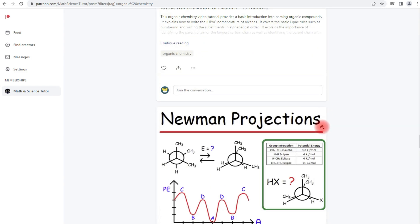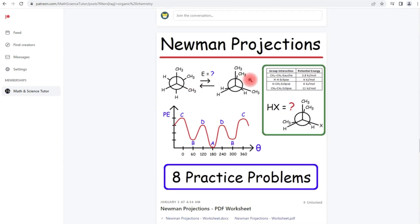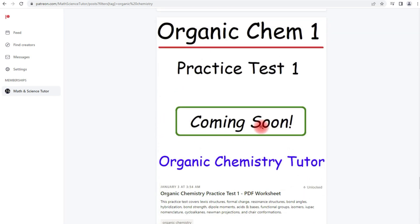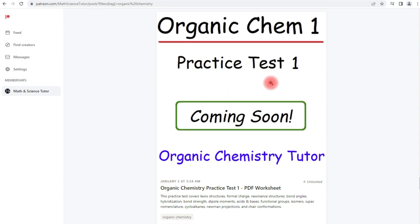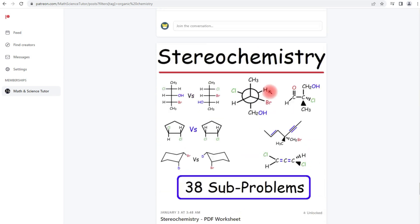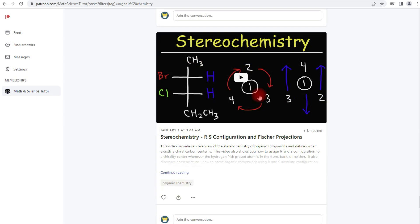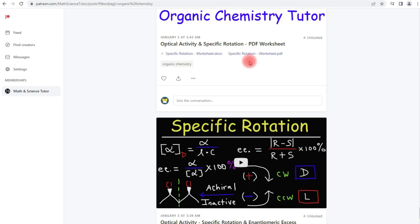Functional groups, IUPAC nomenclature, Newman projections with the worksheet as well, chair conformations. I'm working on this right now, so this is coming up soon.